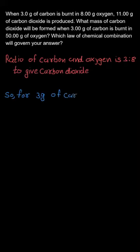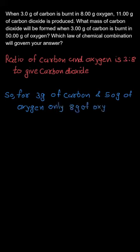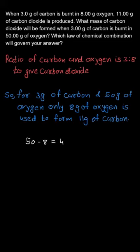So for 3 grams of carbon, if 50 grams of oxygen is burned, out of that 50 grams, only 8 grams of oxygen will be required to form carbon dioxide, as there is not enough carbon for oxygen to react with. So only 8 grams of oxygen will be required and another 42 grams, that is 50 minus 8 grams, will be unused.